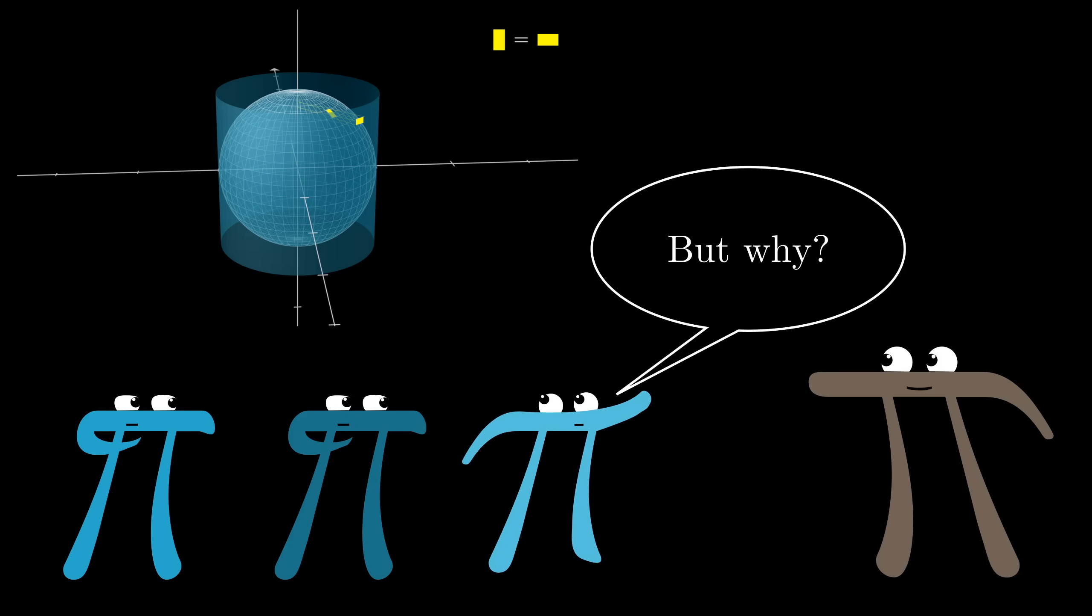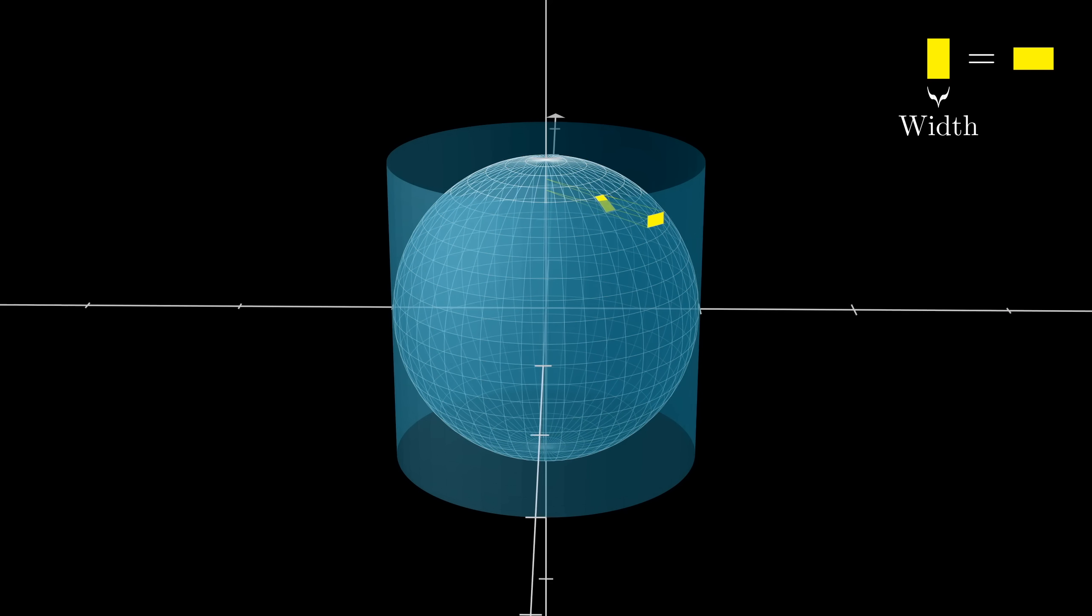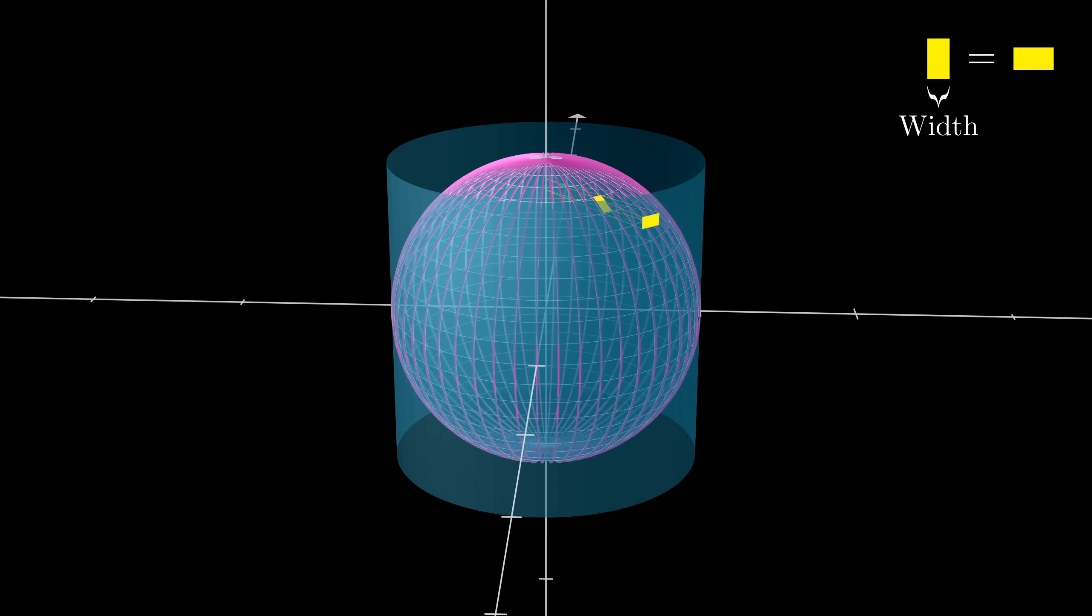But, why should that be? Well, there are two competing effects at play here. For one of these rectangles, let's call the side along the latitude lines its width, and the side along the longitude lines its height.